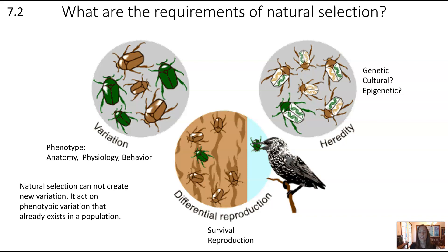A little more detail on each of these. Variation is variation in phenotype, and this can be not just physical — like in these beetles you see differences in color and size — but can also be related to physiology, the inner workings like hormones, musculature, or behavior. Different behaviors are also traits, and those can be influenced by natural selection as well.